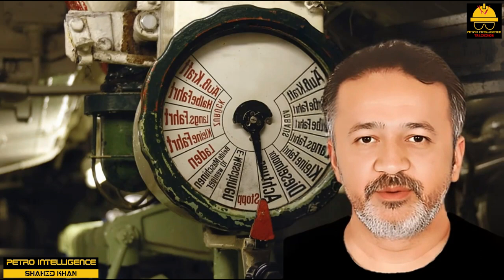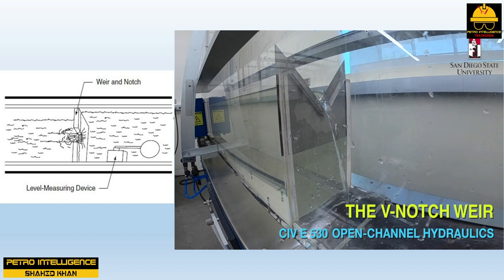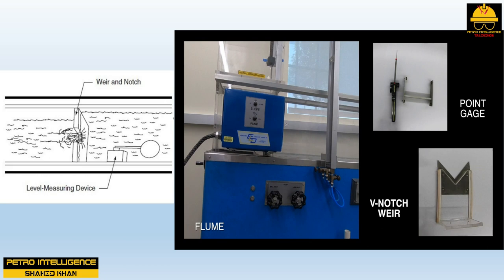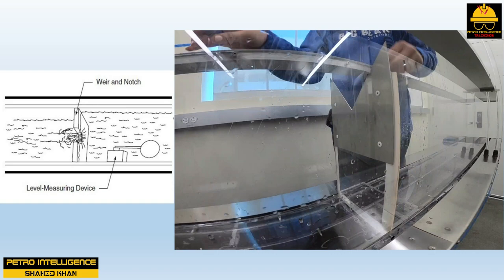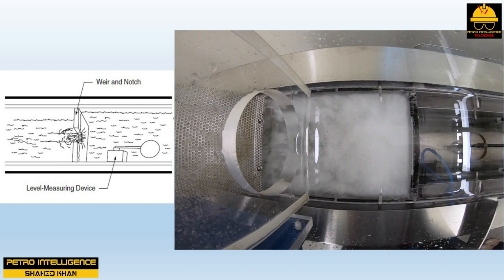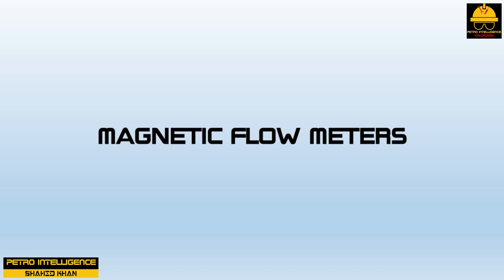Weir and flume flow measuring devices are used to calculate flows in open channels. When a weir or dam is placed into a process stream, it creates a restriction that forces the level to build; this level is used to calculate the flow rate, with a direct correlation between liquid level and flow rate. Flumes operate under the same principles as a weir but are used for higher flows; the flume is a narrow sloping pass that funnels flow, and at the inlet the water level rises and is measured by a level instrument that converts the level to a flow signal.